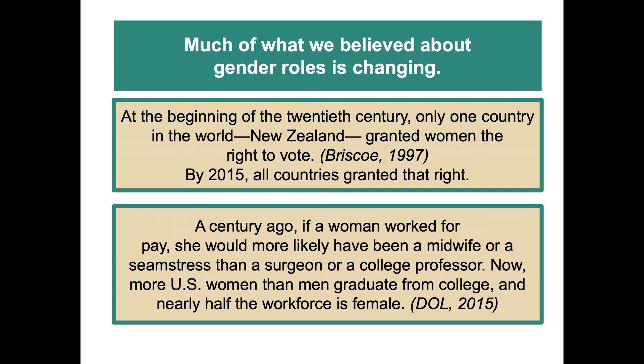Much of what we believe about gender roles is changing — there have been huge changes. At the beginning of the 20th century, only one country in the world, New Zealand, granted women the right to vote, and by 2015, all countries have granted that right. A century ago, if a woman worked for pay, she would more likely have been a midwife or a seamstress rather than a surgeon or a college professor, and we all know that has changed drastically. Now more U.S. women than men graduate from college, and nearly half the workforce is female.